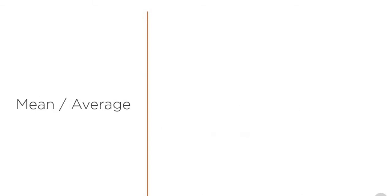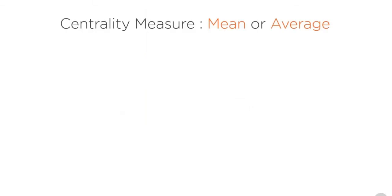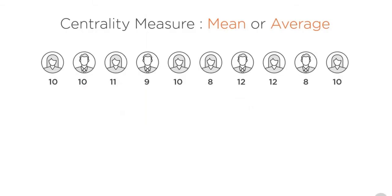First, and in fact the very common centrality measure is mean or average. So you can calculate a single value for a numerical feature, and this figure will tell you about an average behavior for any numerical feature. Let's take an example. Suppose we have 10 passengers and we have age values for these 10 passengers. So we can calculate mean age by adding up all the ages and then dividing by the number of values. So in this case we get a mean value of 10.